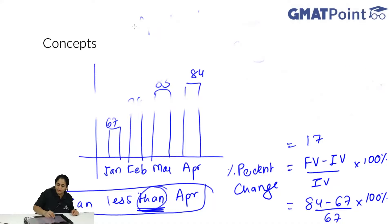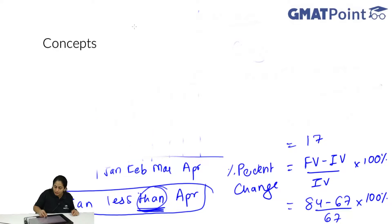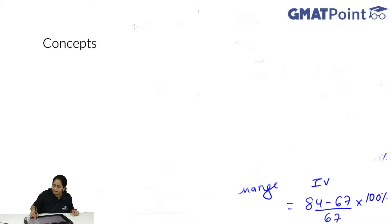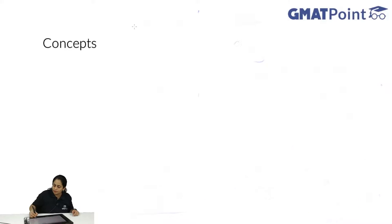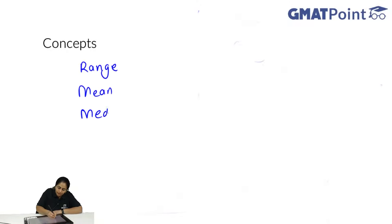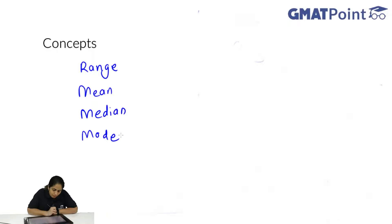If asked 'how much is January less than April?', then April goes in the denominator - 17 divided by 84, not 67. Whatever comes after the word 'than' has to be in the denominator. Most questions in graphs are related to percent change and absolute change. Some other questions are related to descriptive statistics. The most common types of descriptive statistics questions asked are on range, mean, median, and mode.